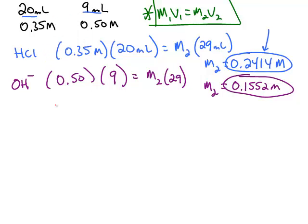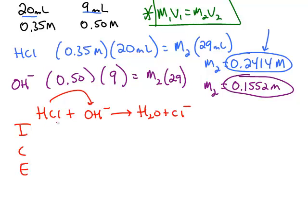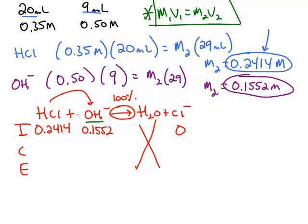Now we have all the parts for our ice chart. Our M1 V1, M2 V2 numbers go in for the initial row. Pure water, liquid, doesn't show up so we don't need that. And the chloride starts at 0. We know this reaction goes 100% to the product side. So whatever chemical is the limiting reactant, a nice 1 to 1 ratio, so we know the smaller number is our limiting reactant.